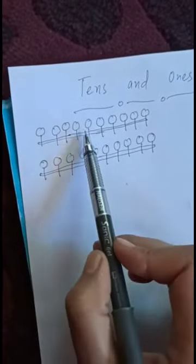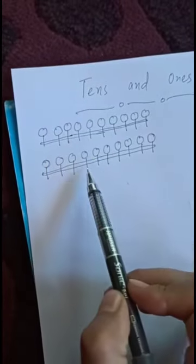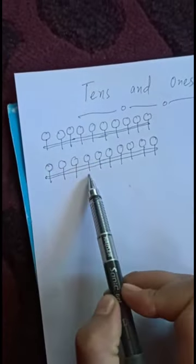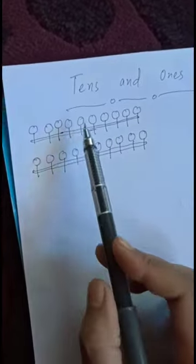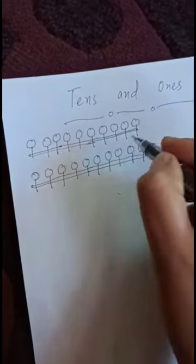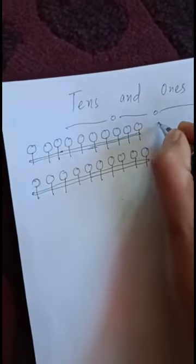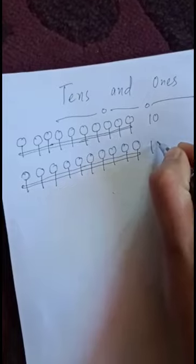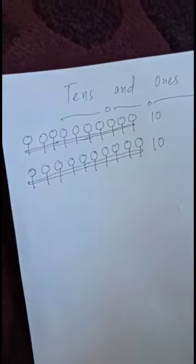One bundle, two bundles — kitne bundles aa gaye? Two: 10 and 10. Dear students, now let's make a group of ten and write the numbers.